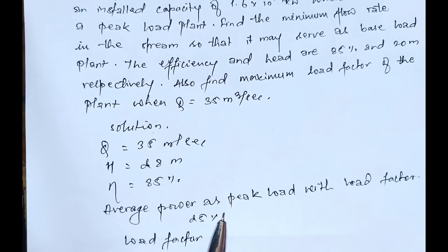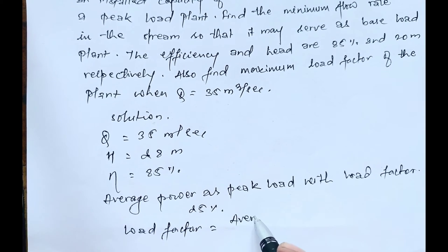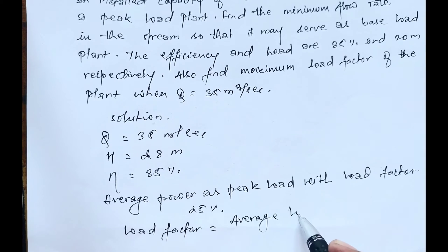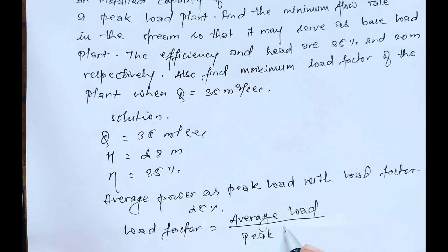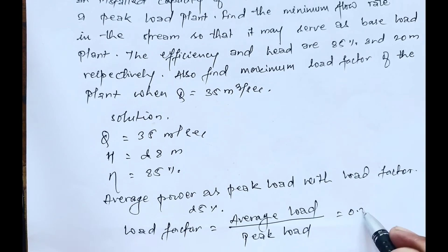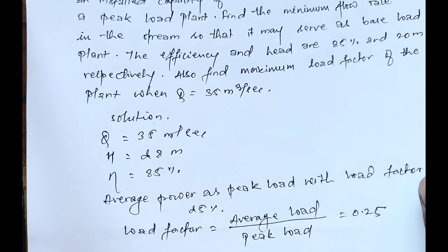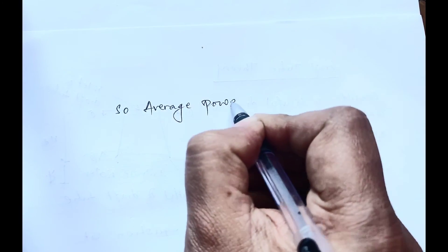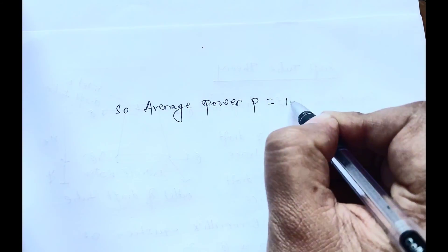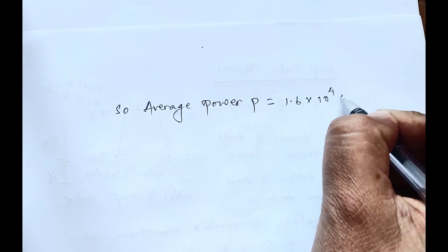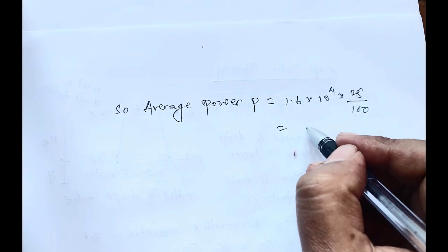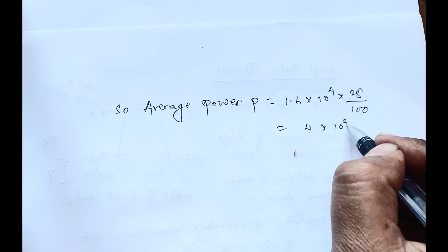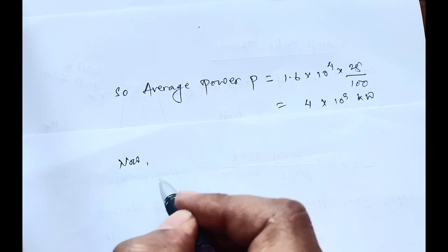Load factor equals average load divided by peak load, which equals 0.25. So average power P equals 1.6 × 10⁴ times 25%, which on solving gives us 4 × 10³ kilowatts.